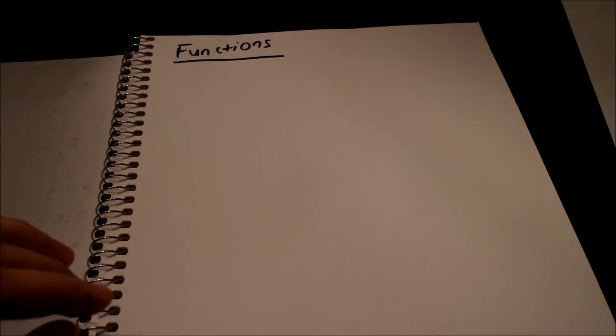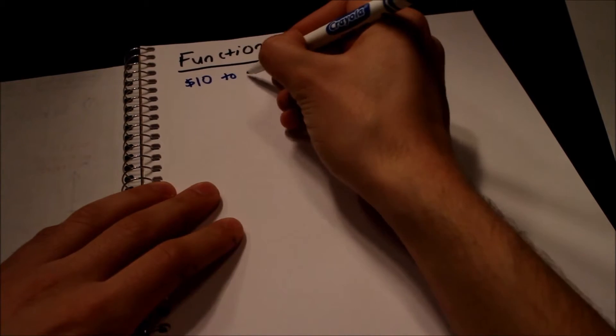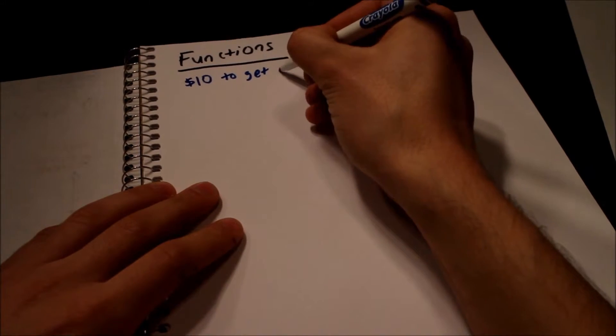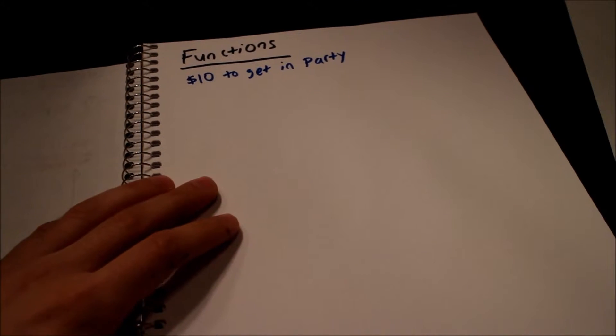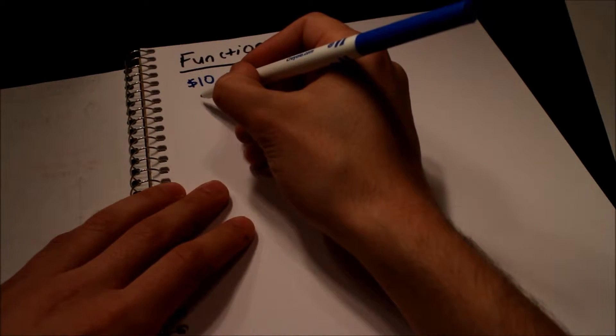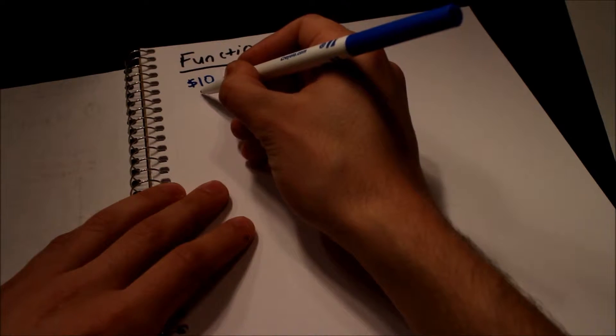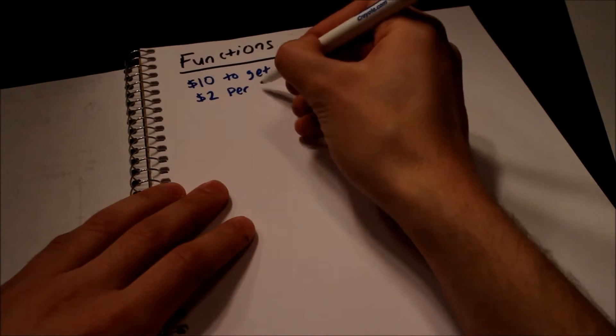Let's make up an example. Let's pretend that my best friend is having a party and he says, hey, it costs you ten bucks just to get into the party. So let's write that down: ten dollars to get in the party. Then he says, hey, if you want to have drinks at the party, it's going to be an extra two bucks per drink. So two dollars per drink at the party.